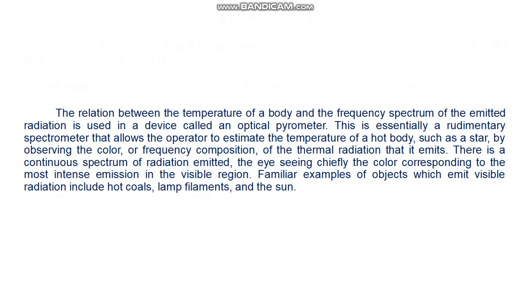This is essentially a rudimentary spectrometer that allows the operator to estimate the temperature of a hot body, such as a star, by observing the color or frequency composition of the thermal radiation that it emits. There is a continuous spectrum of radiation emitted, the eye seeing chiefly the color corresponding to the most intense emission in the visible region. Familiar examples of objects which emit visible radiation include hot coals, lamp filaments, and the sun.